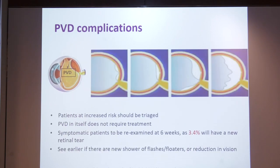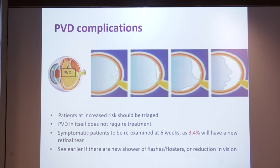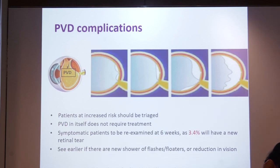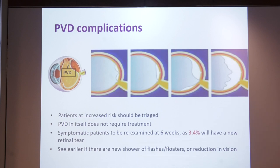Regarding complications: once you have patients with PVD or floaters, you should counsel these patients according to their age and risk factors. PVD in itself does not require any treatment, but symptomatic patients should be re-examined at six weeks as 3.4% of them may have a new retinal tear. See them earlier if they have a new shower of flashes, floaters, or reduction in vision.